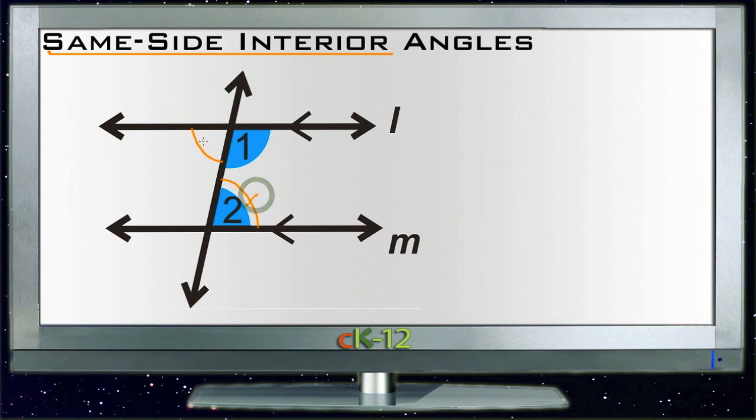And since that angle, whichever one we're talking about, either one of these, is a linear pair with the one on the other side of the transversal, then that tells us that these two angles right here always equal 180 degrees.